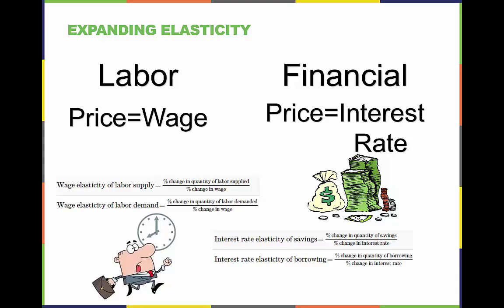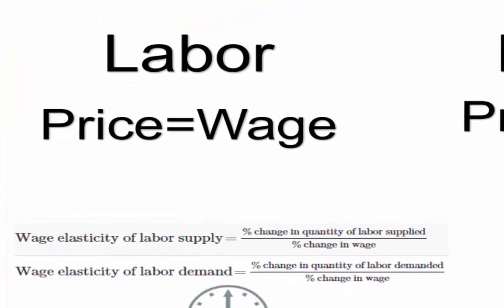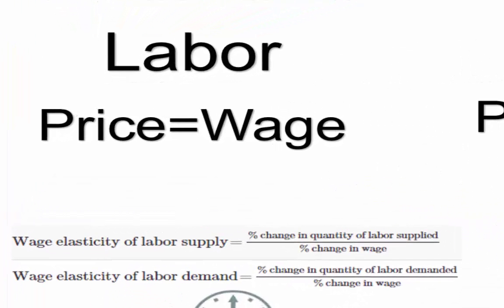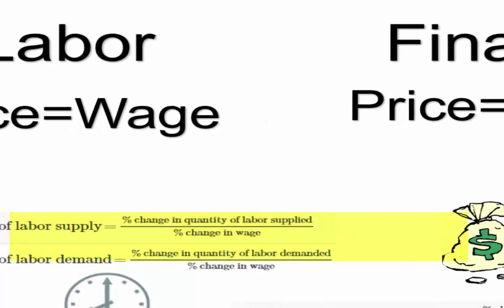We remember that the price of labor was the wage and the quantity of labor was the amount of labor supplied by individuals. Now we can calculate the elasticity of labor supply by using this knowledge and this equation. This coefficient is calculated and interpreted in the same manner that price elasticity of supply and demand are.